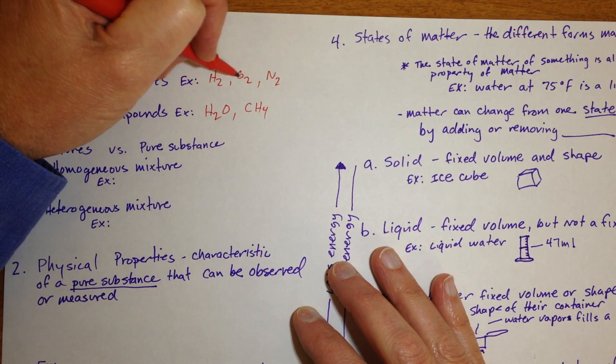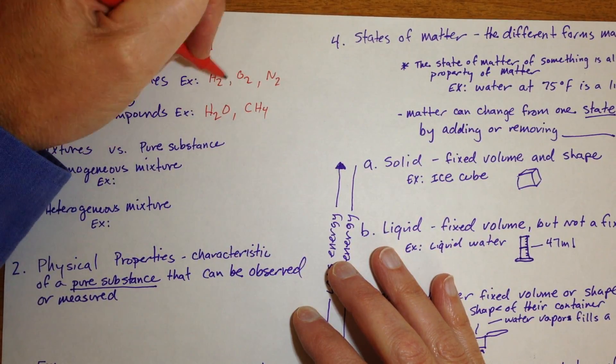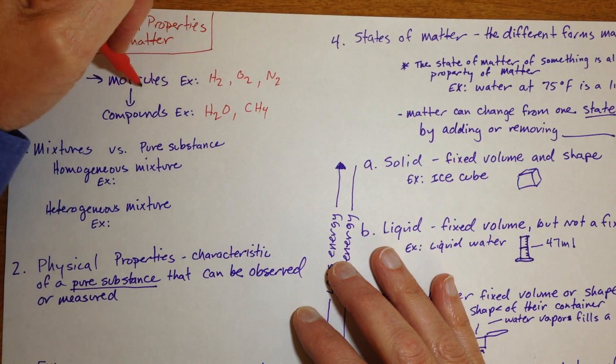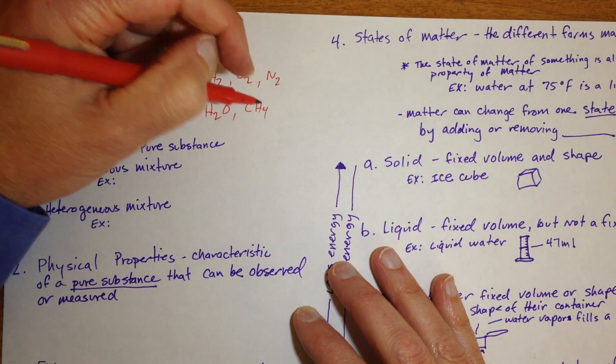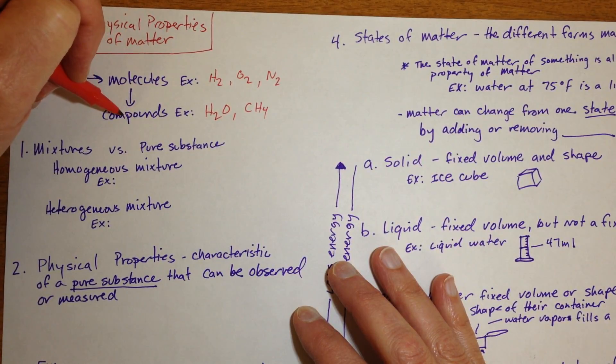These two molecules here are also molecules. These two compounds are also molecules because any two or more atoms connected together are molecules. But if you have different atoms in the molecule, it's also called a compound.